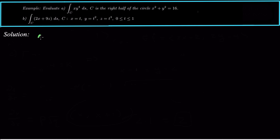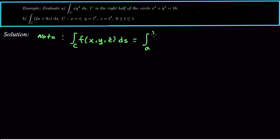The first thing we want to note is the formula for a line integral of a scalar function. That is: the integral over the curve C of f(x, y, z) ds is equal to the integral from A to B of f(r(t)) times the magnitude of r'(t) dt. So when do you know to use this formula? That's given by the ds that you see at the end of the integral — that little ds.